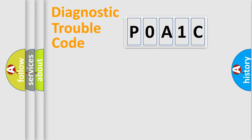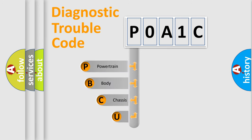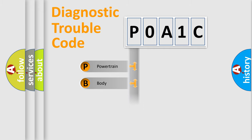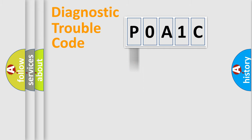Let's do this. First, let's look at the history of diagnostic fault code composition according to the OBD2 protocol, which is unified for all automakers since 2000. We divide the electric system of automobile into the four basic units: Powertrain, Body, Chassis, and Network.